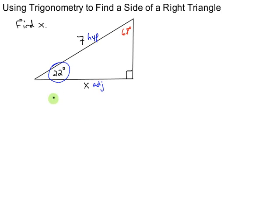So cosine is what comes to mind. So we need cosine of some angle equals adjacent over hypotenuse. So in this case, cosine of 22 degrees equals the adjacent side x divided by the hypotenuse of 7.